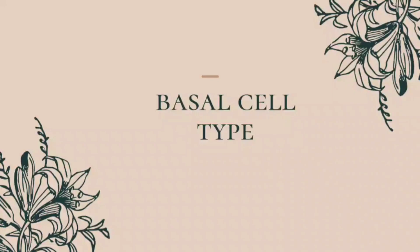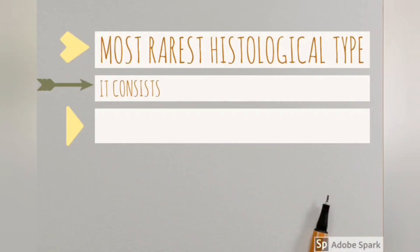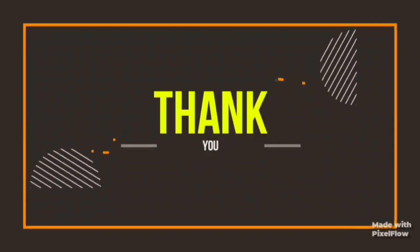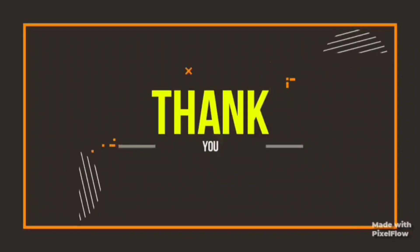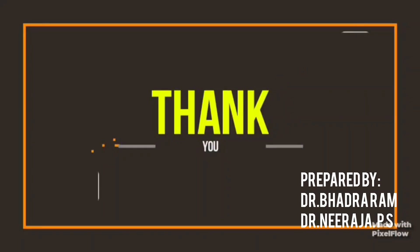Next is basal cell type — it is the most rare histological type of ameloblastoma. It consists of nests or islands of basaloid cells and resembles basal cell carcinoma. That was a glimpse of the histological types of ameloblastoma. Hope it was helpful to you. Thank you.